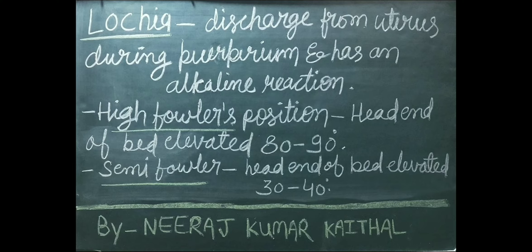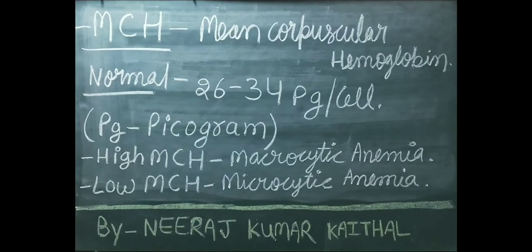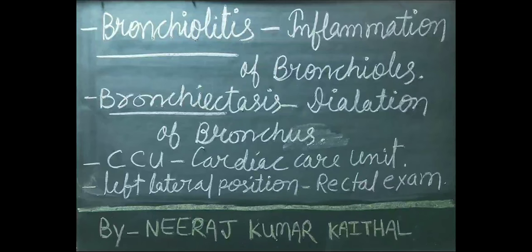Semi-Fowler's position mein bed ka head end 30-40 degrees tak elevate kiya jaata hai. MCH ka full form hai Mean Corpuscular Hemoglobin. Normal value 26 to 34 picograms per cell. Yadi MCH ka level badh jaye toh patient ko macrocytic anemia hai. Yadi MCH ka level kam ho jaye toh patient microcytic anemia se grasit hai.